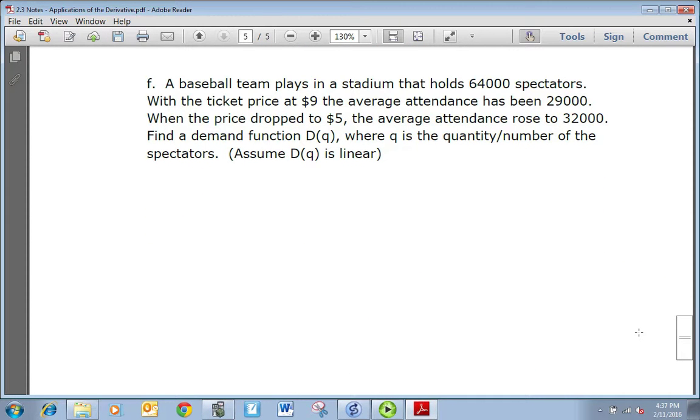A baseball team plays in a stadium that holds 64,000 spectators. With the ticket price at $9 the average attendance has been 29,000. When the price dropped to $5, the average attendance rose to 32,000. Find a demand function D(q) where q is the quantity or number of spectators. We're going to assume that D(q) is linear. So essentially what we've been given are two coordinates. The demand function or the price - D(q) is going to be your price and q is the quantity or the number of spectators. So we want to write our two coordinates according to who is the independent variable and who's the dependent.